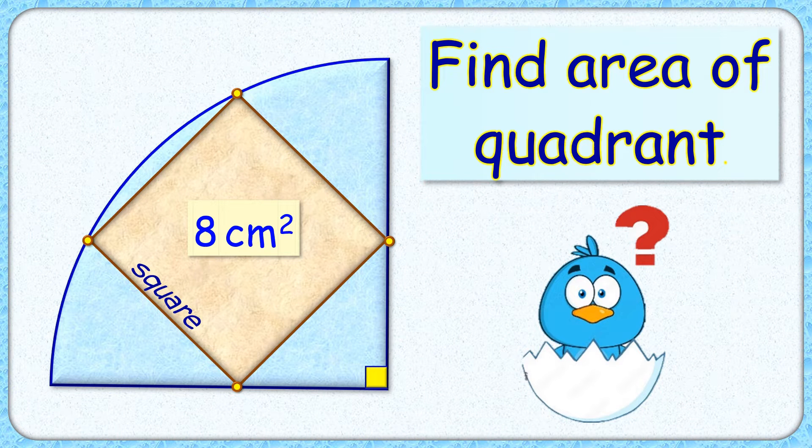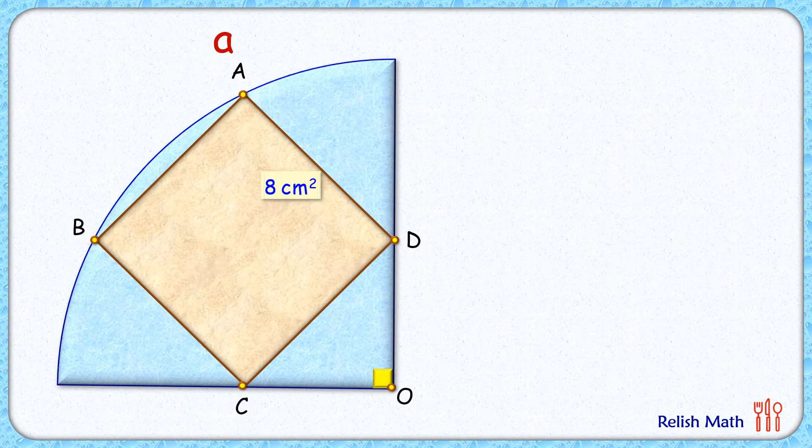Welcome to this interesting question. Given is a square inside a quadrant with the area of square given as 8 centimeter square. The exciting part is with this limited data we have to find the area of quadrant.